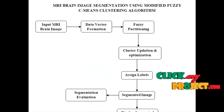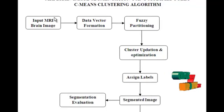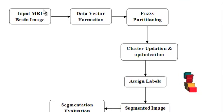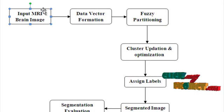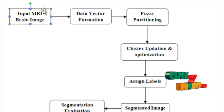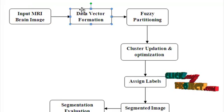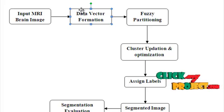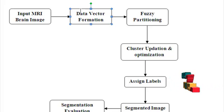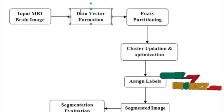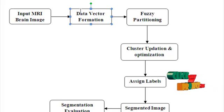Now let us discuss the data flow diagram. The first block is selection of an input MRI scan brain image, which is grayscale in nature. The second block is formation of a data vector. The given input image is in the form of a matrix, and it has to be converted into a data vector so that it can be passed to the next block.